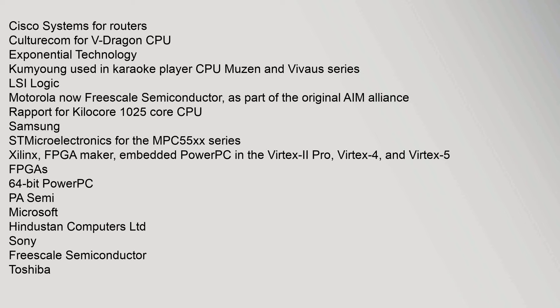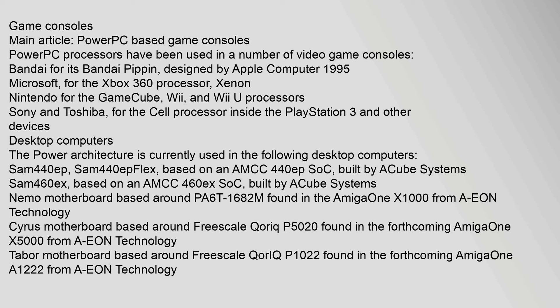PowerPC processors have been used in a number of video game consoles. Bandai used PowerPC for its Bandai Pippin, designed by Apple Computer in 1995. Microsoft used it for the Xbox 360 processor Xenon. Nintendo used PowerPC for the GameCube, Wii, and Wii U processors. Sony and Toshiba used the Cell processor, based on PowerPC, inside the PlayStation 3 and other devices.